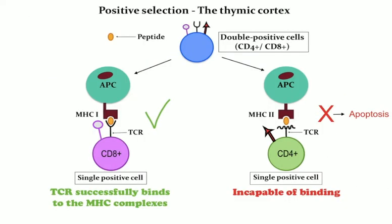Positive selection occurs in the thymic cortex. To address the necessity that T-cells can be capable of binding MHC complexes, T-cells undergo positive selection. In this process, cells in the thymus present short pieces of proteins called peptides on their own MHC class I and class II molecules, allowing immune T-cells to bind. If the TCRs are incapable of binding, the T-cell will undergo a type of cell death called apoptosis.